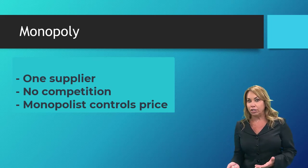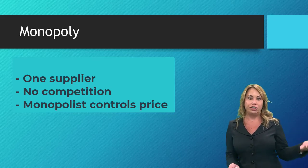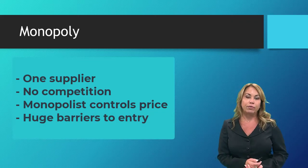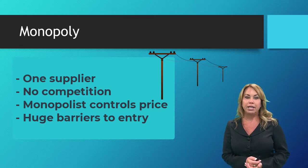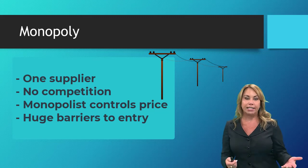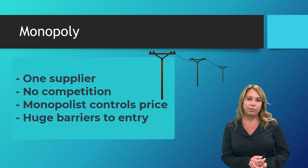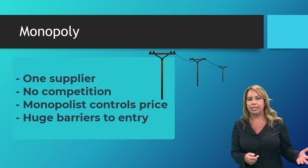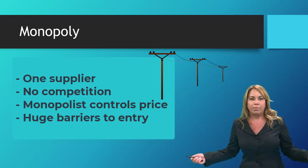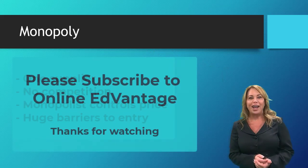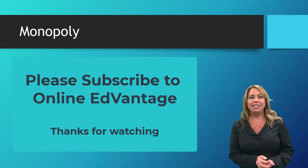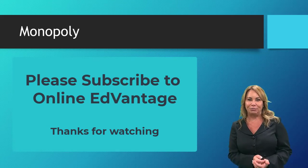Why do monopolies result? Oftentimes because of the huge barriers to entry into the market. A great example is the utility industry — it is very capital intensive and cost prohibitive to lay utility lines. So once one company has done it, it would be very difficult to run your own utility lines just in case someone might choose your company instead. I hope this video has helped you — thanks for watching, and please click on the Advantage logo to subscribe to our channel.